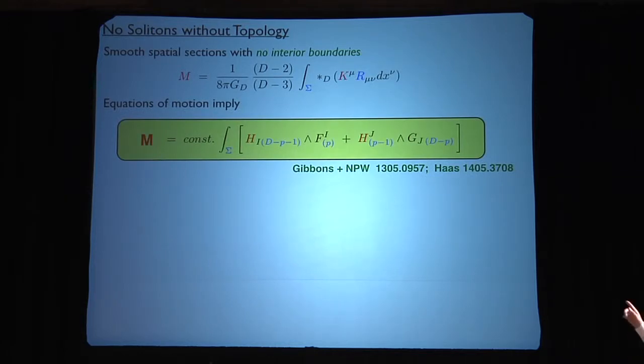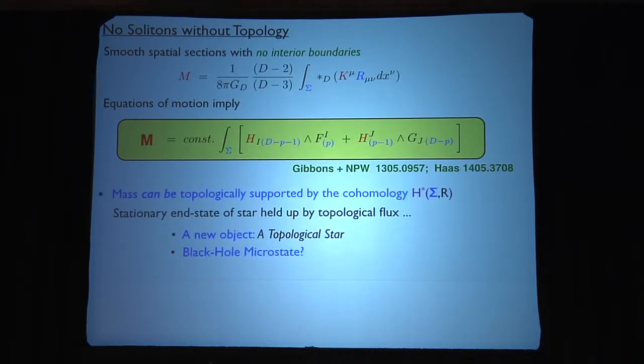So basically, all the tensor gauge fields can give you harmonic pieces of forms, and then you put it into the equations of motion, you just simply take Einstein's equations, you work a bit, and at the end of the day, here's the formula you get. The mass of the entire system is entirely determined by a topological integral, the harmonic forms wedged into the forms you first thought of, the intersection of the harmonic bits with the original fields. Gary and I did it in five dimensions, my student generalized it to 11 dimensions, but this is the reason why there can be mass. So it's a win-win situation. You either have a new object that's supported by cohomology, call it a topological star, or this, as I believe, represents some kind of black hole microstate structure.